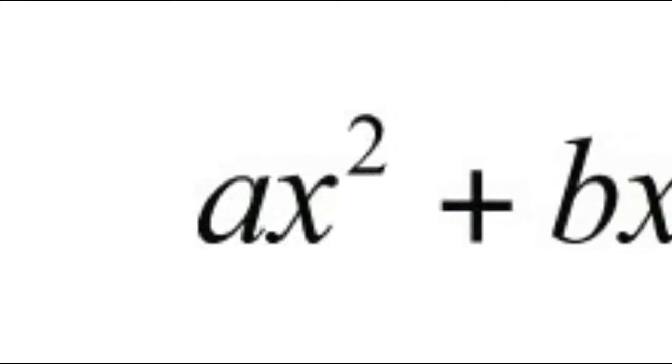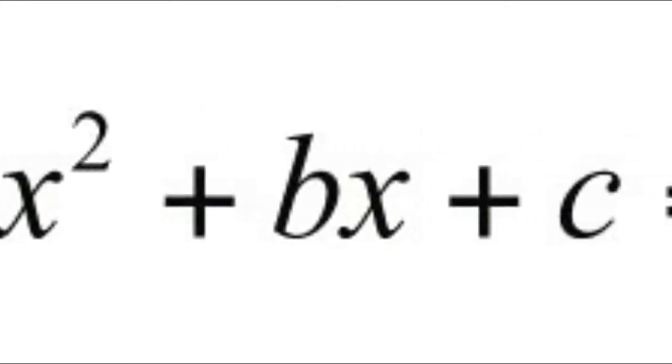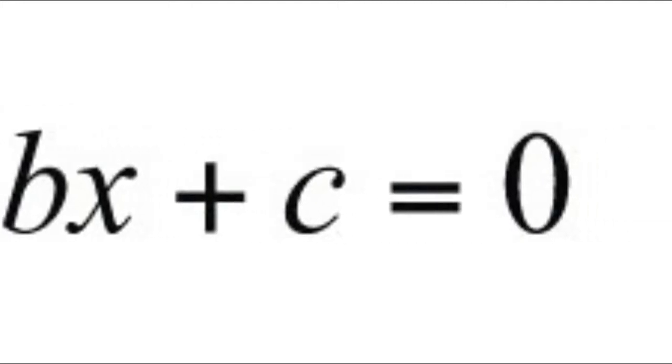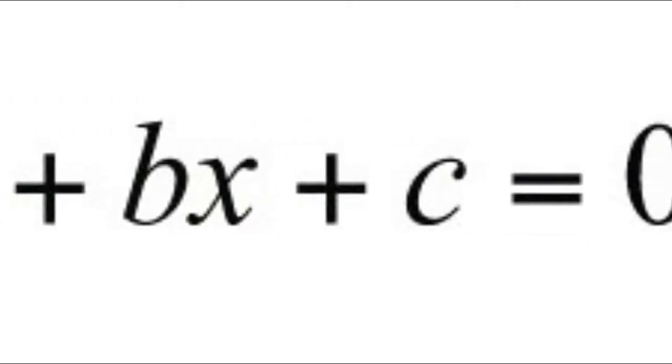Hello, today we are going to talk about the quadratic formula. The standard form of a quadratic equation is ax squared plus bx plus c equals zero. There are four methods for solving a quadratic equation, and in this video I'm going to try and explain them all.